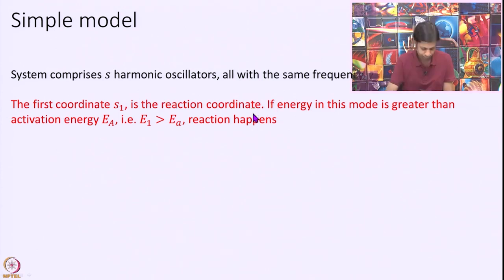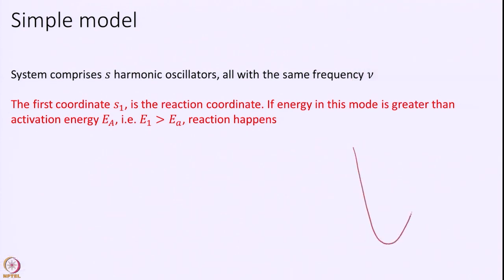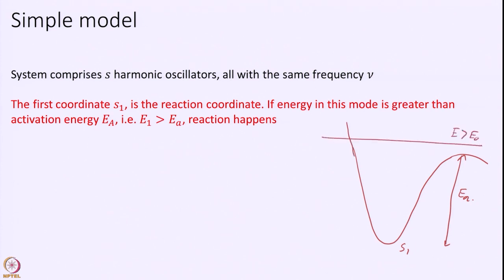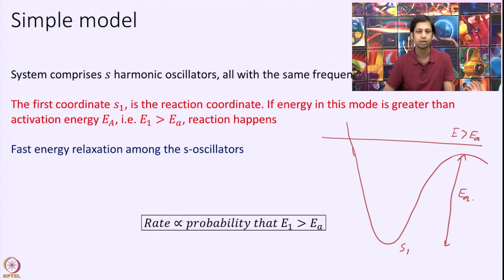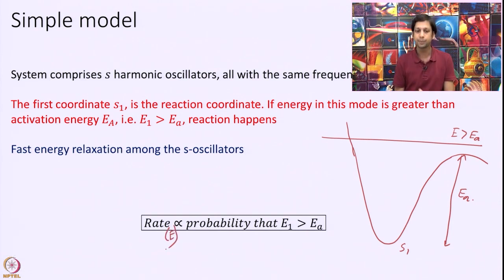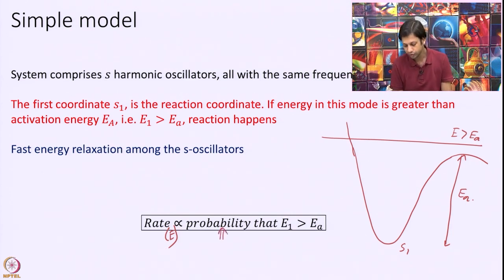If a certain amount of energy gets deposited in this reaction coordinate, the reaction will happen. I have total energy E, and mode S1 essentially represents E_A. If the energy in this one mode is greater than E_A, the reaction will happen. The final assumption is that there is fast energy relaxation among the S oscillators, so all modes have equal probability of getting the energy — it is just a matter of permutations and combinations.